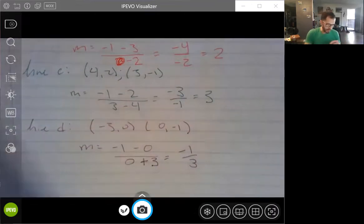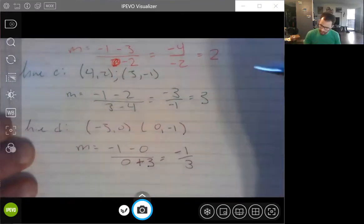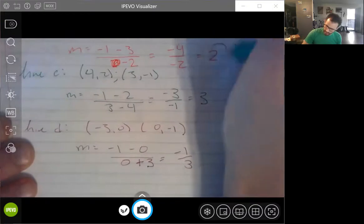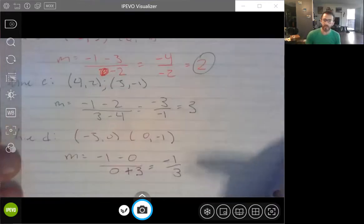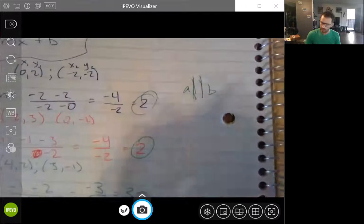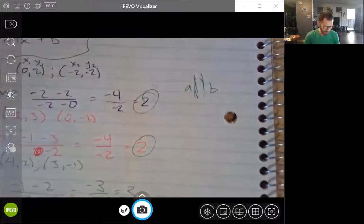All right. Now, what can we say? Well, this was kind of simple right here. These are the same slopes. That means that line A is parallel, right? Two big lines, two bigger lines. You can't even see what I'm writing. Line A is parallel to line B. Done.